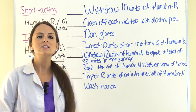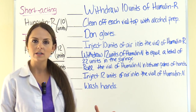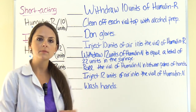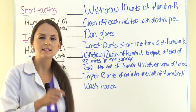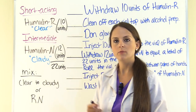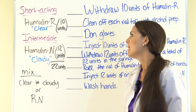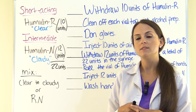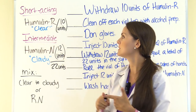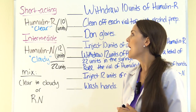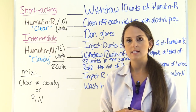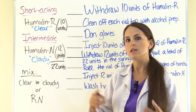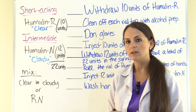This is one of those drag and drop type NCLEX style questions you may encounter. We need to take these steps and put them in the correct order for how we will mix insulin. First, think about what type of insulin you're mixing. The physician has ordered Humulin R — specifically 10 units. Humulin R is a regular insulin and it is short acting. Any insulin named like Novolin R or Humulin R — those are your regular insulins.